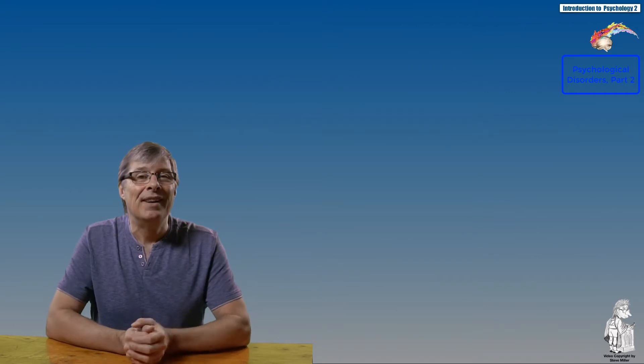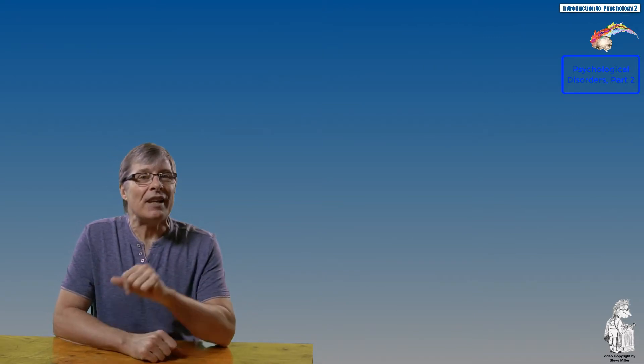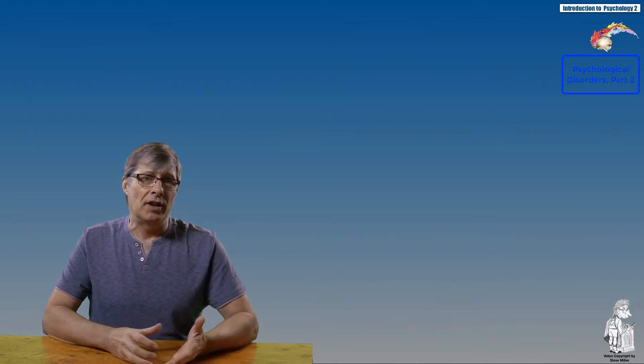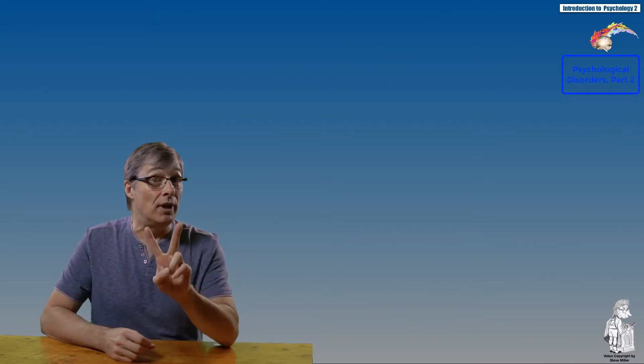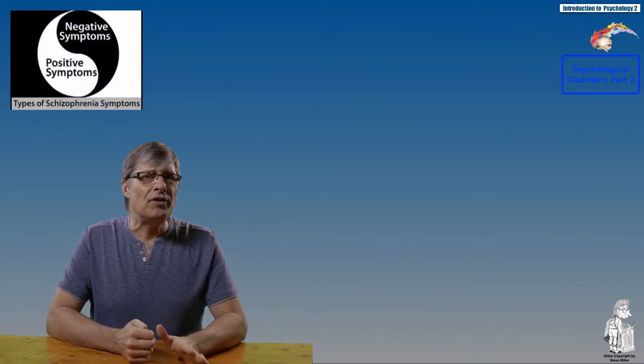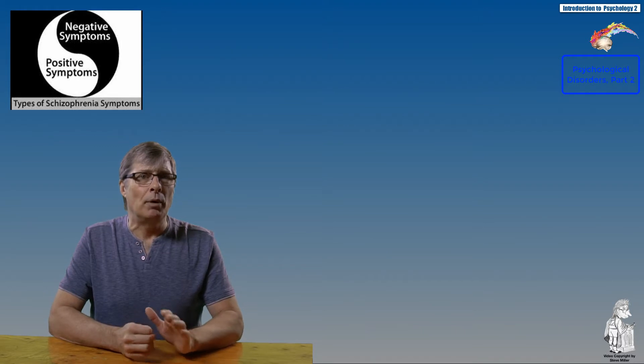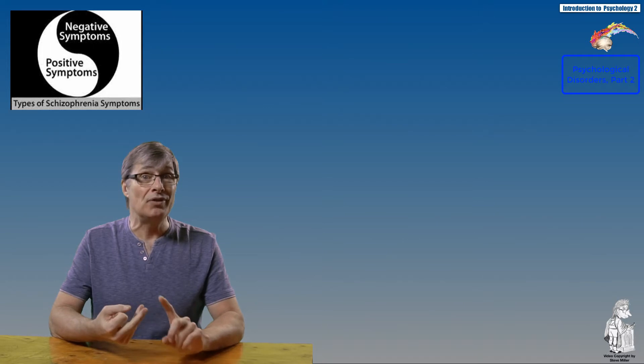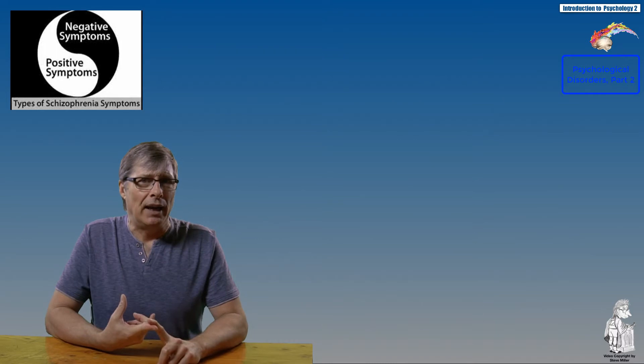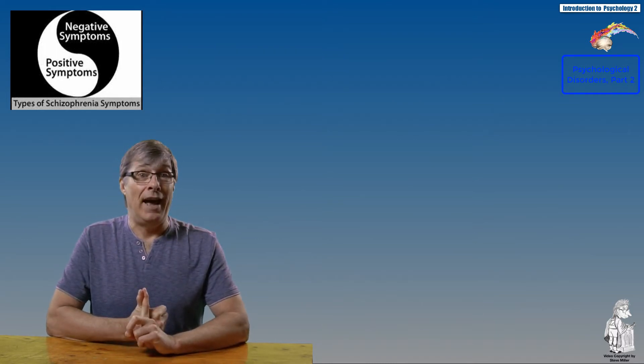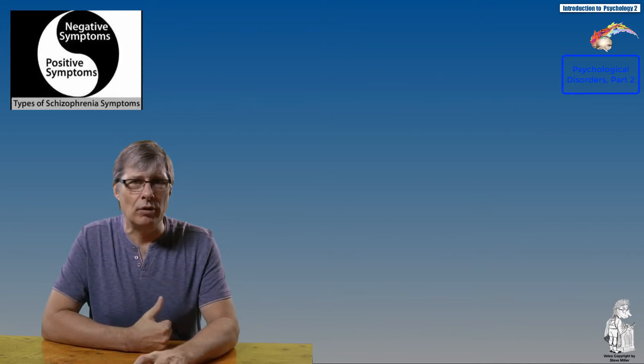Now we're going to start with schizophrenia. There are many symptoms for schizophrenia, and these symptoms fall into two categories: positive and negative symptoms. The positive symptoms are abnormal behaviors or characteristics including hallucinations, delusions, disturbances in form of thought and speech, grossly disorganized behavior, and inappropriate affect.